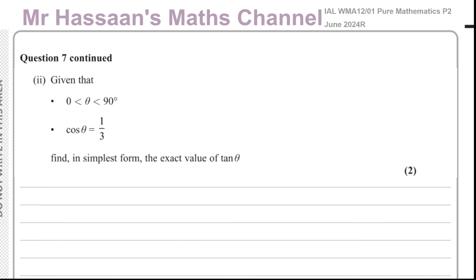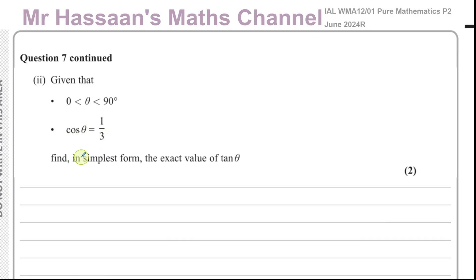Now continuing to part two — though it's actually a totally separate, independent question. It says: given that theta is between 0 and 90 degrees and cosine theta equals one third, find in its simplest form the exact value of tan theta.